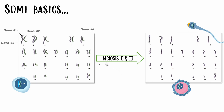Meiosis 1 and meiosis 2 are covered in detail in a separate chapter of IB biology, but for this video to make sense we need to recap two very important things that happen in meiosis 1 that will make this video much easier to understand. During meiosis 1, two things happen that are super important: crossing over and independent assortment.